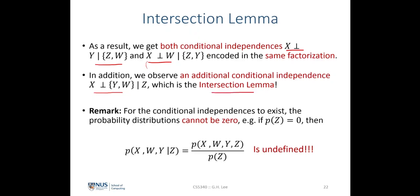A brief remark: the exact proof of the intersection lemma is very abstract and not required for the class. Those interested should refer to the textbook by Daphne Koller. Earlier it was mentioned that the probability distribution cannot be zero for the intersection lemma to hold. A counterexample: if the probability distribution of z equals zero, the conditional probability (joint probability divided by marginal probability of z) becomes undefined — anything divided by zero renders it invalid, so the intersection lemma no longer holds.